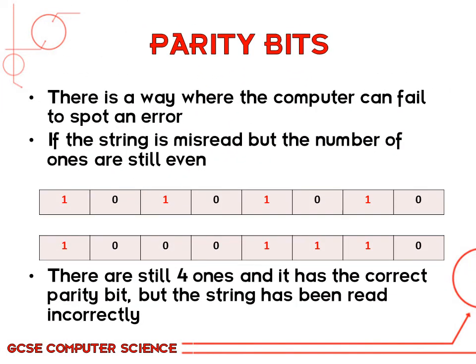Finally, there is one way computers can fail to spot an error. As good as computers are, there are still errors and mistakes. If you look at these two bytes, the first is how it should be read and the parity bit is correct as there are four ones. But the second string also has four ones and the parity bit is also correct, but the ones are in the wrong position so the data would actually be read incorrectly.